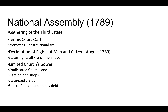The National Assembly represents the interests of the Third Estate, which is the largest population-wise throughout the country, and so they immediately get the support of large numbers of French working class people, French peasants, and the French middle class. They're able to exert influence relatively quickly. An important event that cements their influence and power is known as the Storming of the Bastille.